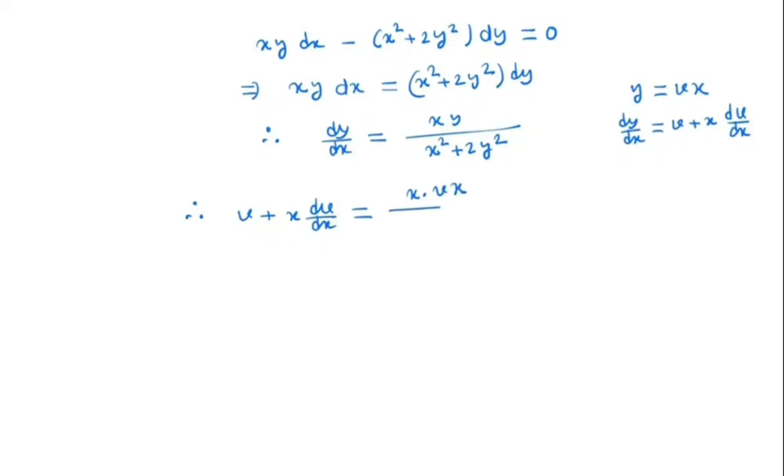And y is vx, so x square times v square x square. So in the numerator we have vx square, the denominator we have x square times 1 plus 2v square, which is nothing but v by 1 plus 2v square.